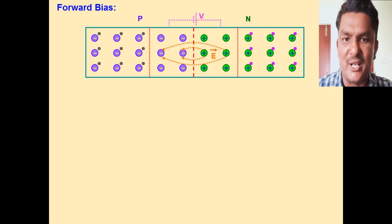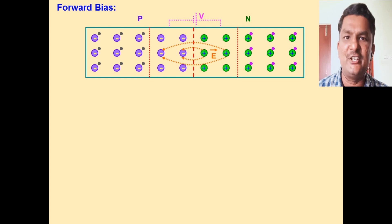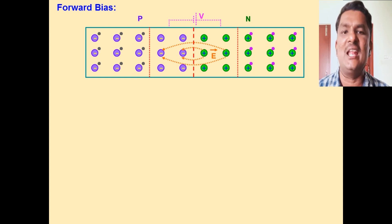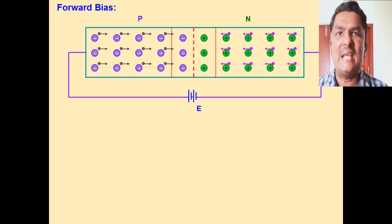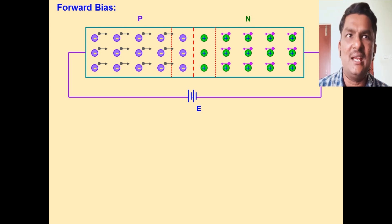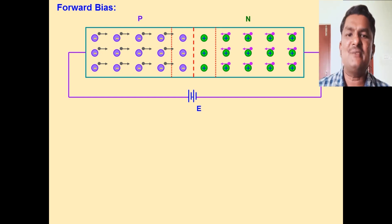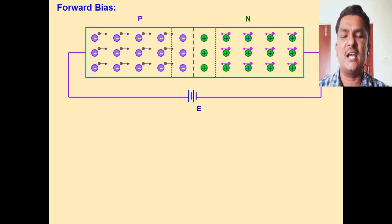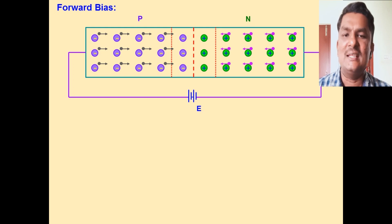Now what happens when a p-n junction diode is connected to an external electrical source? Consider a p-n junction diode connected to a battery of EMF E such that the p-type semiconductor is connected to the positive terminal of the battery and the n-type semiconductor is connected to the negative terminal of the battery. When connected this way, we say that the diode is in forward bias condition.